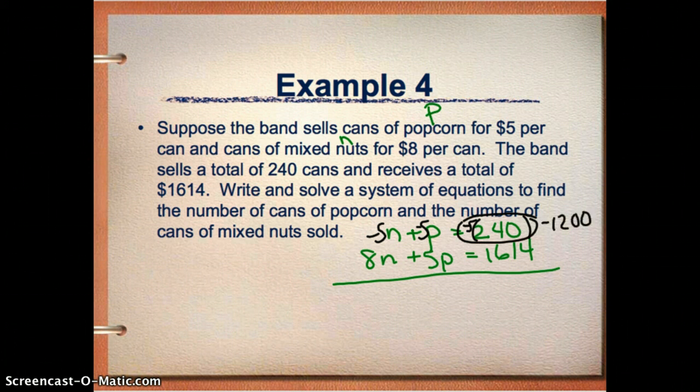So then this happens to equal negative 1,200. And usually I actually would write it over. I'm just kind of crunched for space. So I've got 3N over here. And that should equal 414. And then if I divide 414 by 3, I get N equals 138.